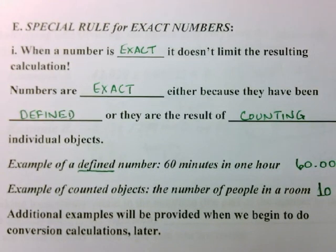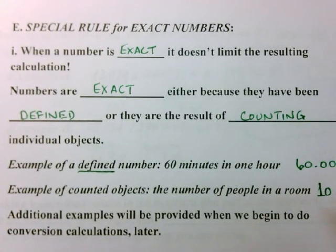However, if you know that that number ten is the result of someone going in and individually counting every person in the room, then we know that that number is exact because it's the result of counting objects. And then we would say that both the one and the zero are significant, and any calculations that are based on that number are not limited for sig figs.